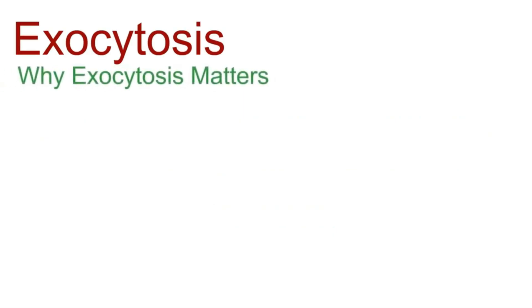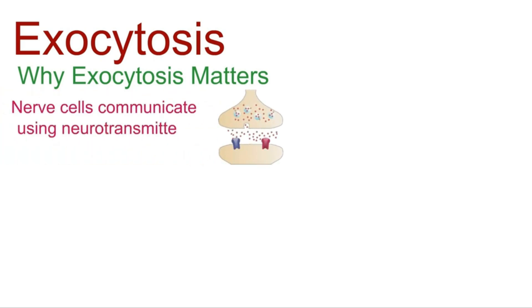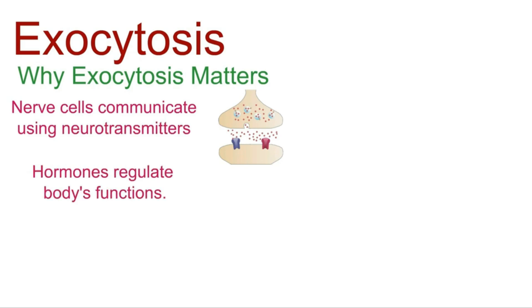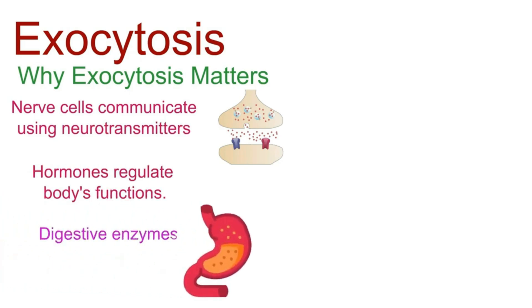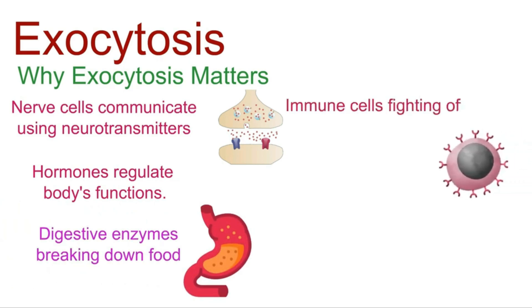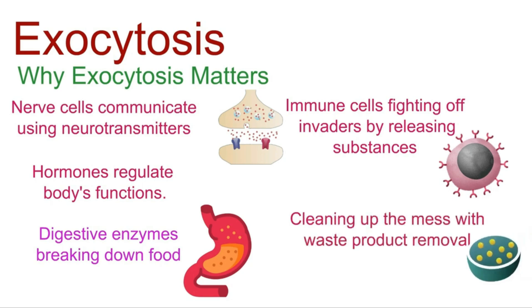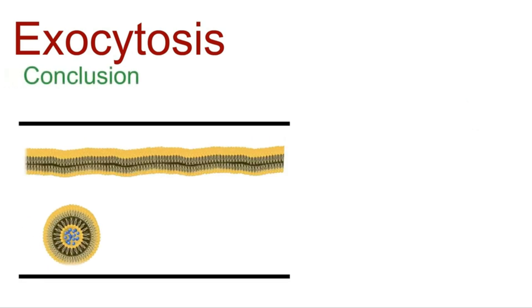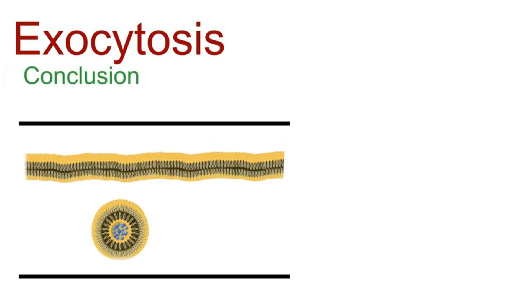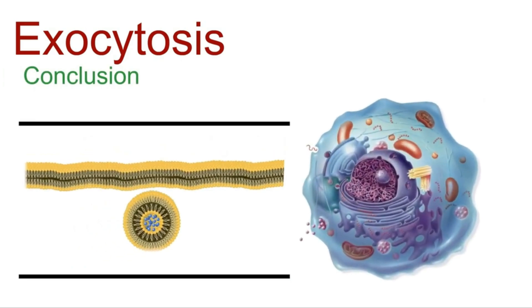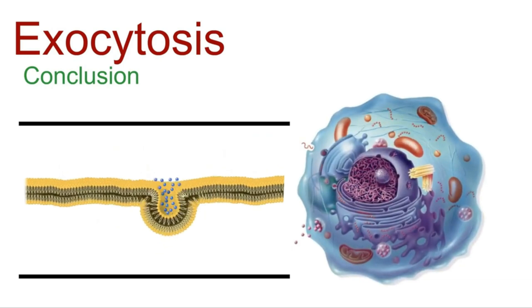Exocytosis is responsible for things like nerve cells communicating using neurotransmitters, hormones regulating your body's functions, digestive enzymes breaking down food in your stomach, immune cells fighting off invaders by releasing substances, and waste product removal. It's a carefully orchestrated performance that keeps your cells running smoothly and allows them to interact with the world around them.